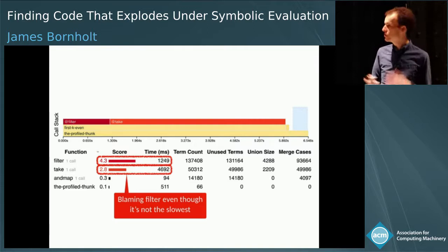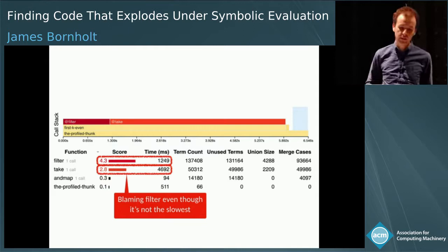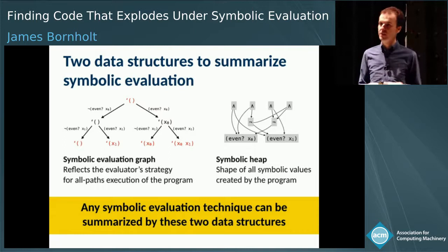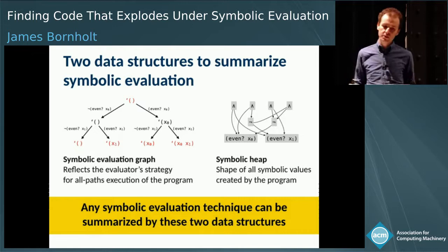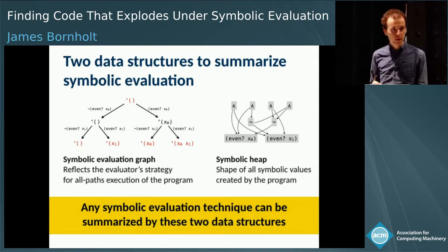I want to show you more detail about how symbolic profiling can identify filter as the bottleneck. The key is the two data structures we developed. The first is called the symbolic evaluation graph, which reflects the strategy the symbolic evaluation engine is taking to evaluate the all-paths execution. There are many different ways to do all-paths execution. The second is called the symbolic heap, which summarizes the kinds of symbolic values your program is creating — leaf nodes, conjunctions of values, and so on, showing how much state your program is creating.